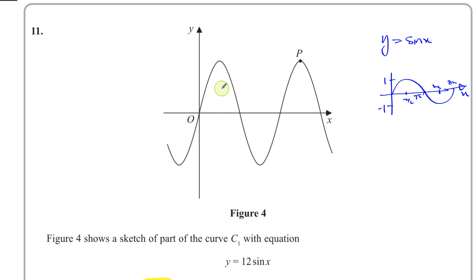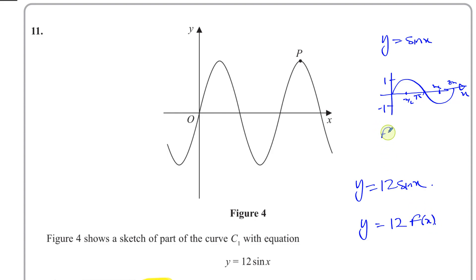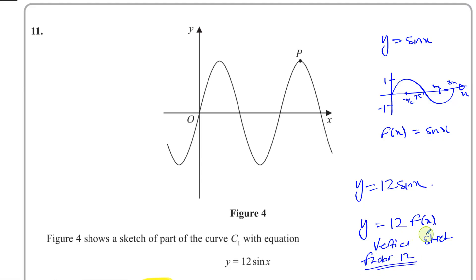This is the first place it reaches its maximum. Now, when we have y equals 12 sine x, this is like y equals 12 times f(x), where f(x) is the original curve sine x. This is a transformation called a vertical stretch — a vertical stretch of factor 12. All the y coordinates are multiplied by 12, and the x coordinates stay as they are.